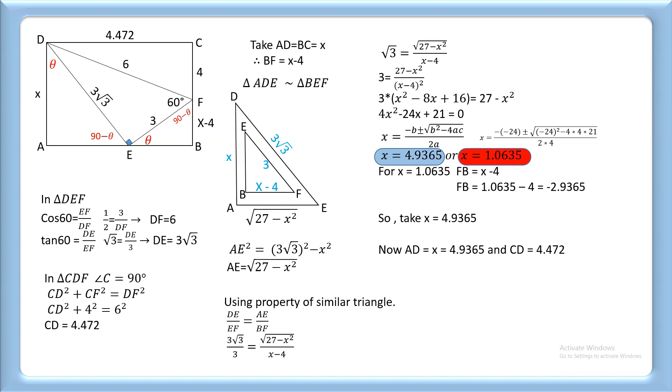The area of the rectangle equals AD × CD. We get 4.9365 × 4.472 = 22.076. That is our answer.